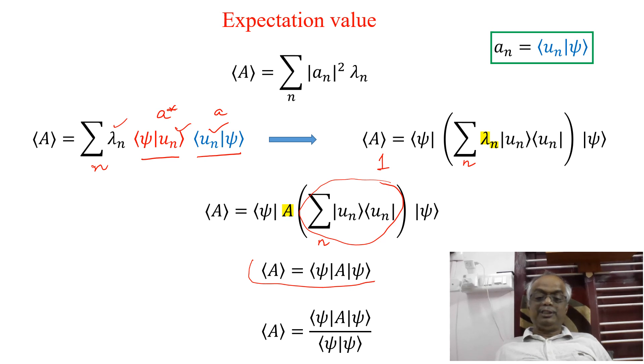Here we have assumed Psi is normalized. If it is not normalized, then no problem. You divide it by Psi with Psi. So Psi star Psi. So this is the definition for expectation value. Thank you very much for watching my video continuously and supporting me.